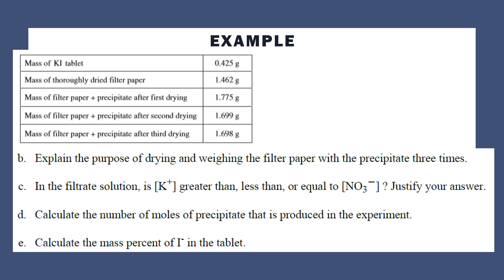Now we're looking at our data table more closely. Explain the purpose of drying and weighing the filter paper with the precipitate three times. The point of that is to make sure that all of the water has evaporated. Let me write our net ionic equation again: we have our iodide and lead(II) ions forming lead(II) iodide. You need to filter out this solid product and it will have some water on it. You need to dry out all the water so that your final mass is just that lead(II) iodide. This was just one point: to make sure all the water has evaporated.